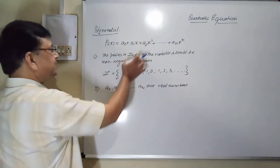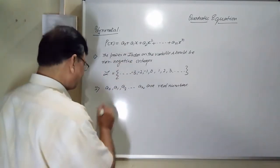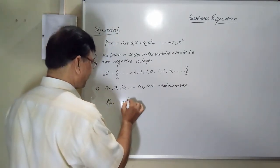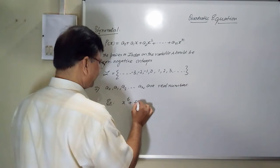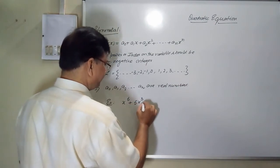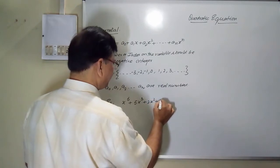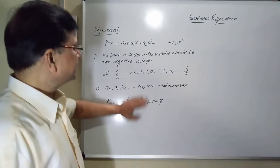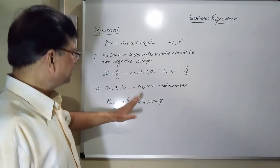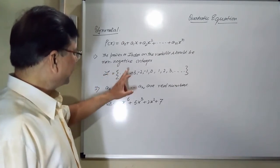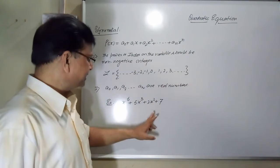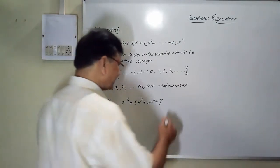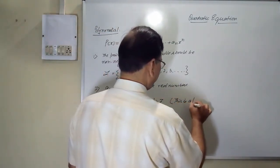Let me give you an example. Suppose I write x⁶ + 5x³ + 2x² + 7. Is it a polynomial or not? This is of the required form, and the powers on the variable are 2, 3, 6 — all non-negative integers. Therefore this is a polynomial.